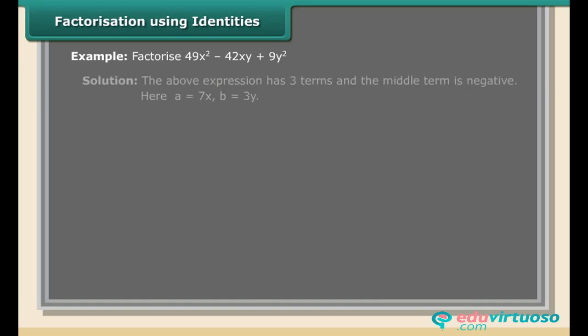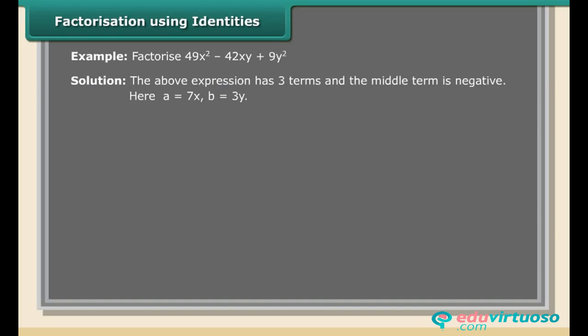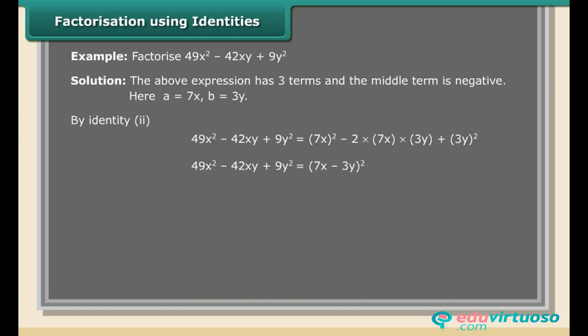Example: Factorize 49x² − 42xy + 9y². Solution: the expression has three terms and the middle term is negative. Here a = 7x, b = 3y. By identity 2: 49x² − 42xy + 9y² = (7x)² − 2(7x)(3y) + (3y)² = (7x − 3y)².